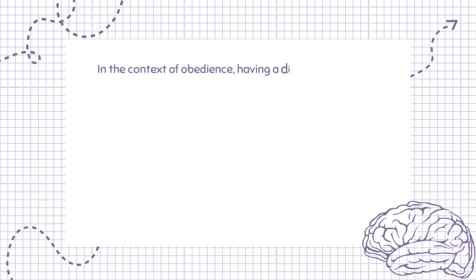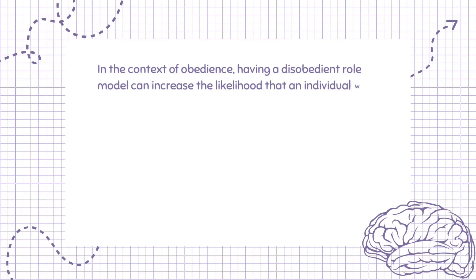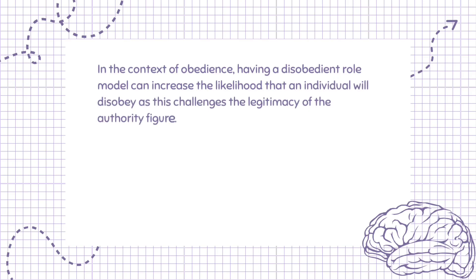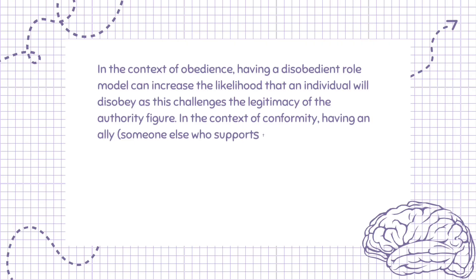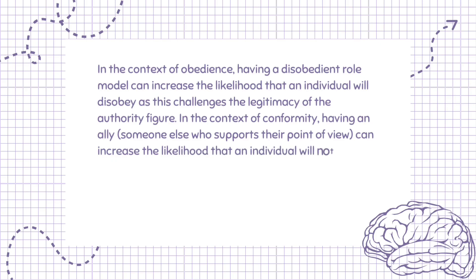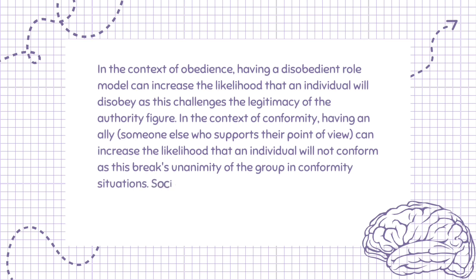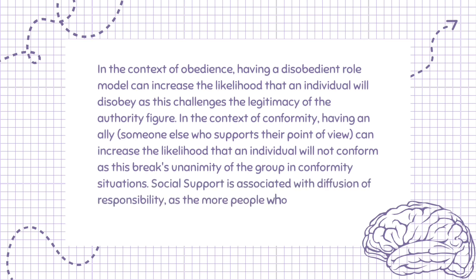In the context of obedience, having a disobedient role model can increase the likelihood that an individual will disobey, as this challenges the legitimacy of the authority figure. In the context of conformity, having an ally — someone else who supports their point of view — can increase the likelihood that an individual will not conform, as this breaks the unanimity of the group. Social support is also associated with diffusion of responsibility, as the more people who disobey, the less severe the consequences are likely to be.